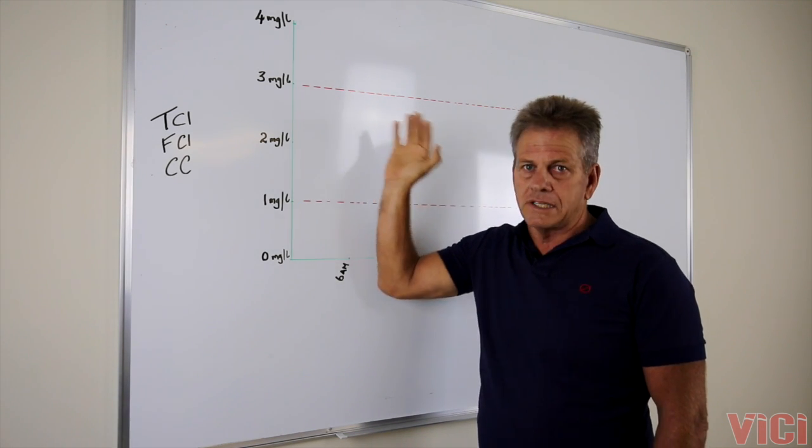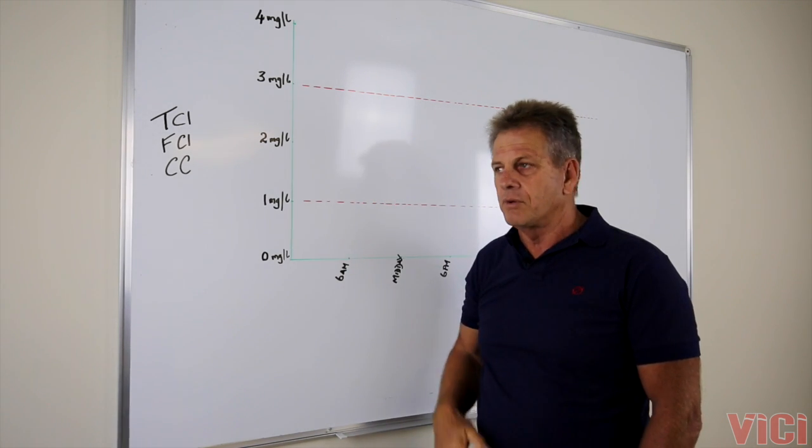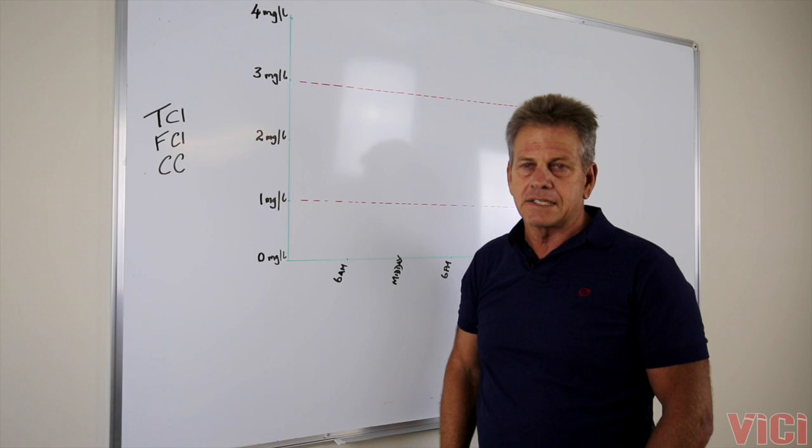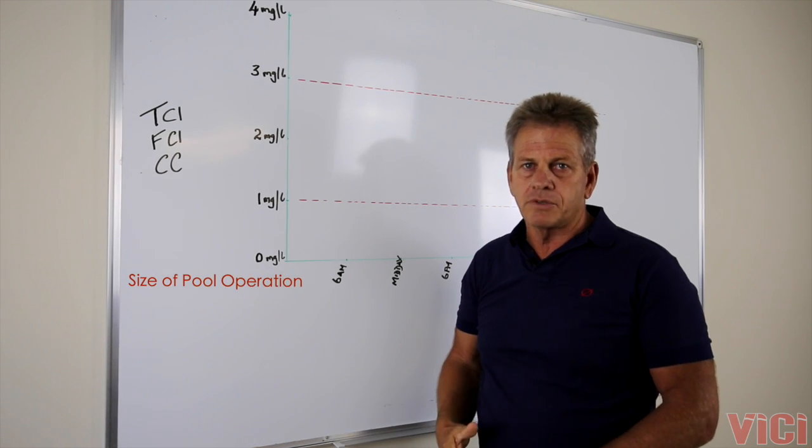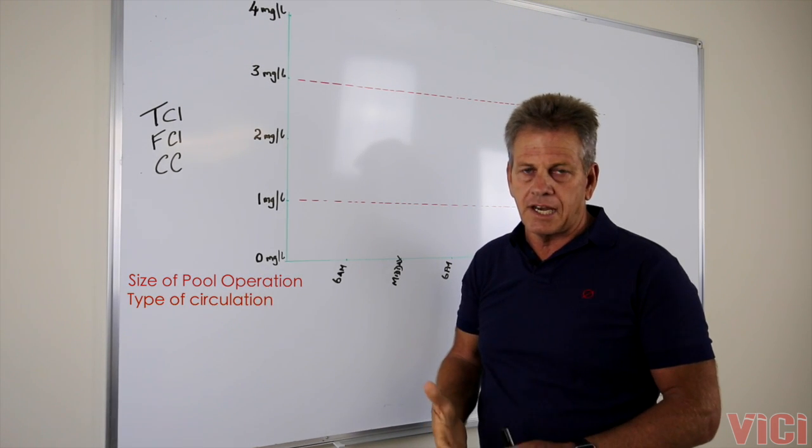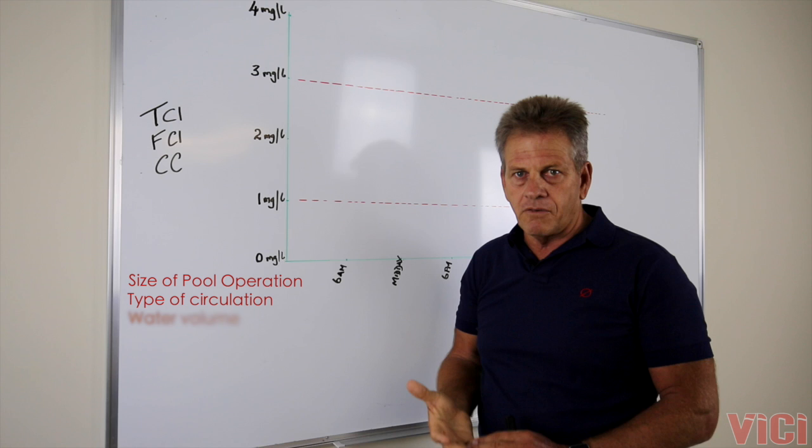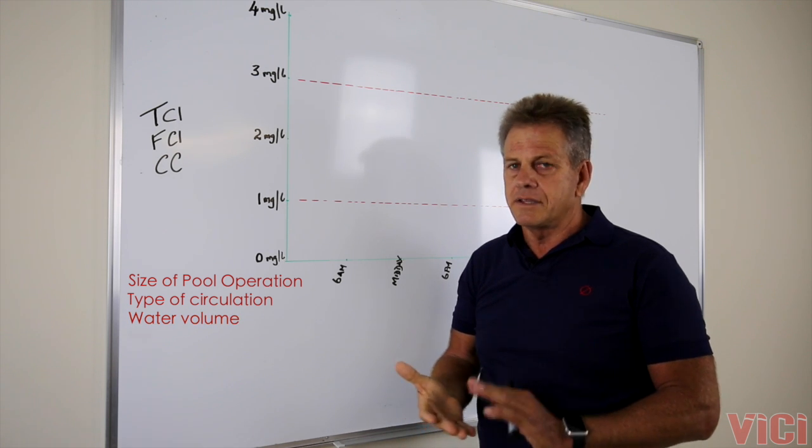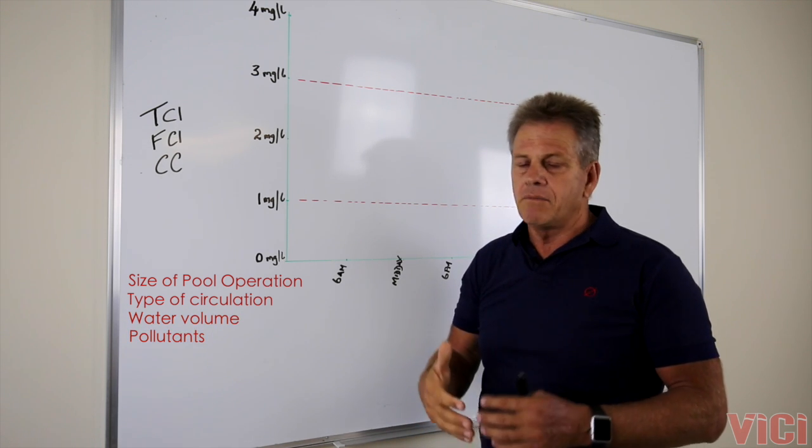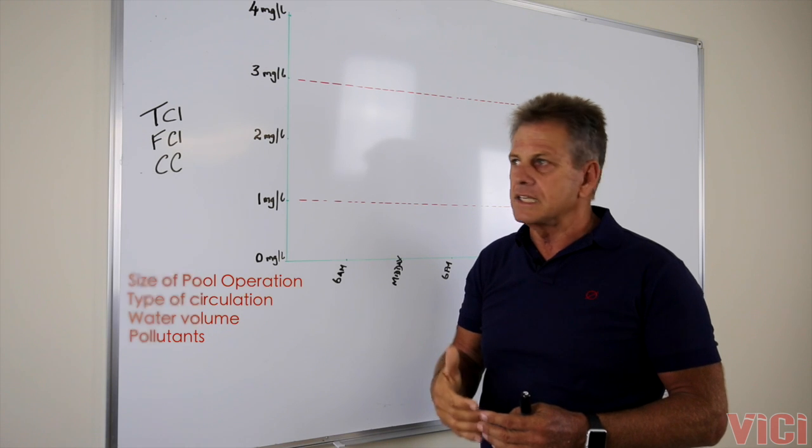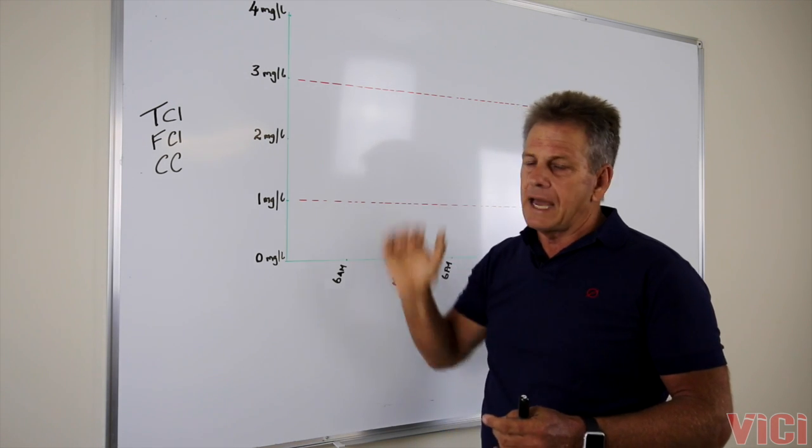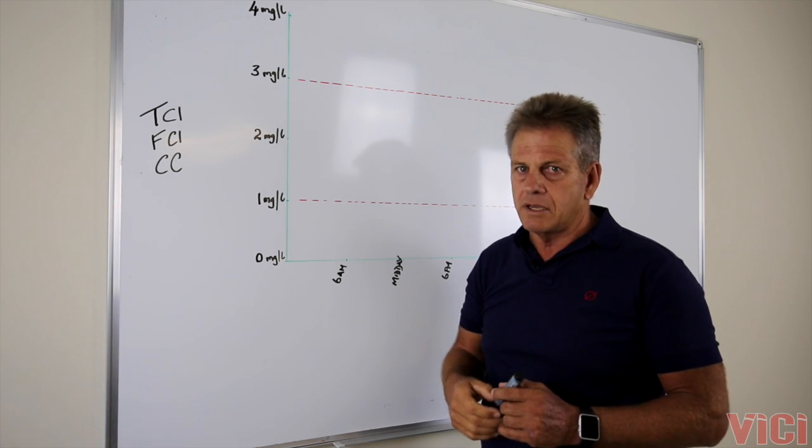To determine what the total chlorine setting is going to be in the swimming pool, we have to look at a number of factors including the size of the pool's operation, the type of circulation system, the volume of water in the pool, the types of pollutants that will come to the pool. Once we've evaluated all of those things, we can then work out what our total chlorine reading is going to be.